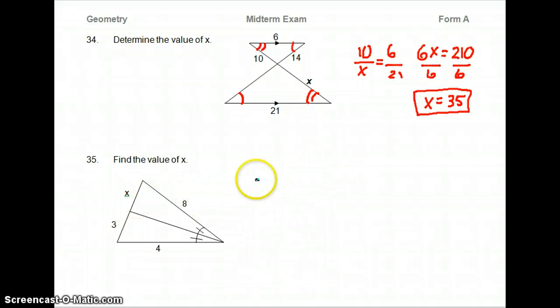So we're done. 35 says find the value of X. Well, this is pretty much set up for us already. X over 3 equals 8 over 4. Cross multiply. This is 24 equals 4X. Divide by 4.